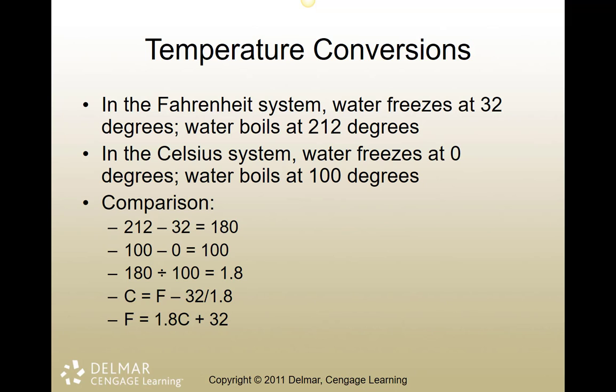Fahrenheit is based on mercury and is a much older system, probably developed in Europe in the 1400s or 1500s. Water freezes at 32 degrees Fahrenheit and boils at 212 degrees based on the movement of mercury. When work began on the metric system in the 1800s, a scientist named Celsius developed a new system based on water: water freezes at 0 degrees Celsius and boils at 100 degrees.